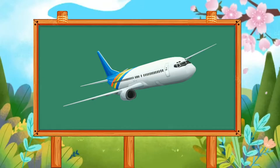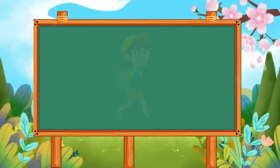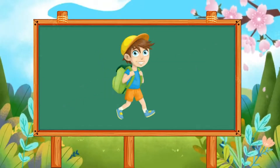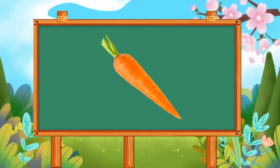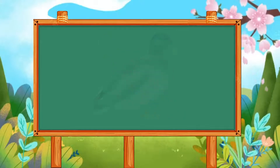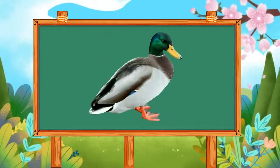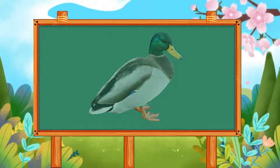A is for aeroplane. B is for boy. C is for carrot. D is for duck.